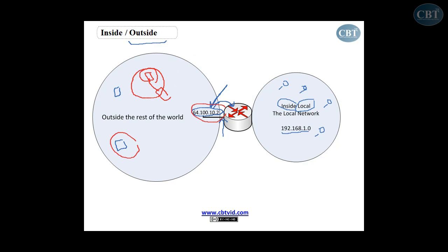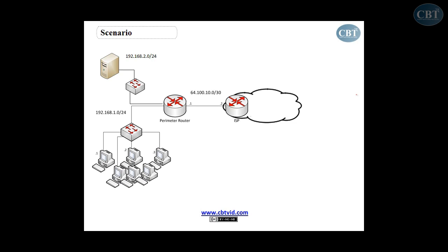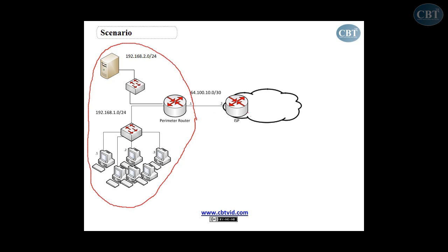Now I'm going to go through a scenario I've created. I think we've talked enough about the concept, so now it's time to configure NAT and see how we configure it, where we configure it, and how it works. I have a perimeter router — this part is all my local network. Here is the ISP, which is on the internet, and through that ISP I get access to the internet — it's outside my network.